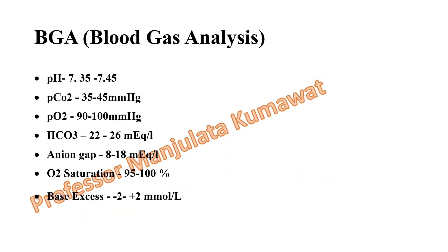Blood gas analysis includes the following parameters you should know: pH is 7.35 to 7.45; PCO2 is 35 to 45 mmHg; PO2 (partial pressure of oxygen) is 90 to 100 mmHg; bicarbonate is 22 to 26 milliequivalents per liter; anion gap is 8 to 18 milliequivalents per liter; oxygen saturation is 95 to 100 percent; and base excess is minus 2 to plus 2 millimoles per liter. These parameters are also asked at the time of viva.